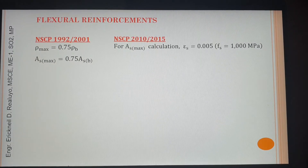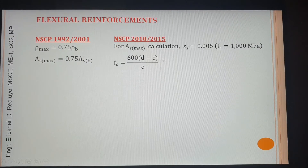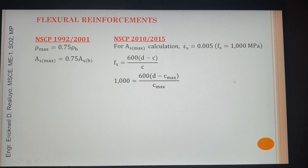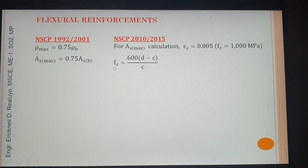NSCP actually uses strain, but I am converting it to stress for the reason that in board exam problems as well as in real life, the available values are stresses — though you can convert those into strains. So if you already know this: when fs equals 1000, c becomes c_max.